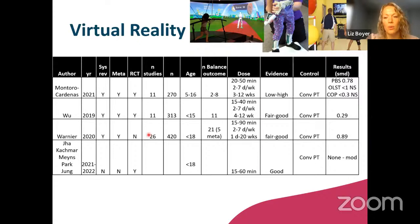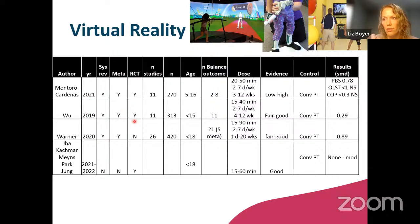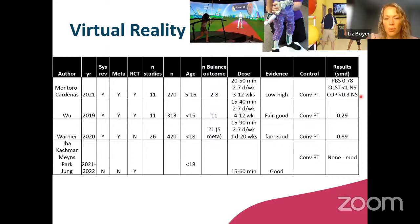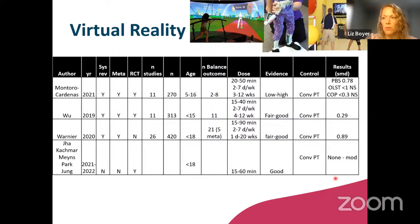Virtual reality — which includes VR headsets, video games, exergaming, visual surrounds, Nintendo Wii boards, and Kinect — is by far the most well-studied intervention for balance outcomes in this population. We have three systematic reviews, two of which are of RCTs. On average we see small to large effects for the different balance outcomes reported, though some one-legged stance and center of pressure measures did not show significant improvements over conventional therapy. This work is continuing, with at least five other RCTs in the last couple of years showing variable results from no effect to moderate effects. One systematic review looked at dosage and did not see stark differences in outcomes.